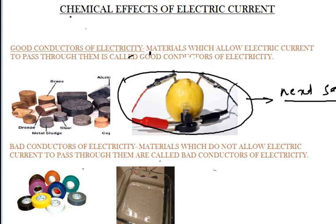Now about the bad conductors of electricity. There are tape, cello tape, and glass. These do not allow electric current to pass through them, so they are bad conductors of electricity.